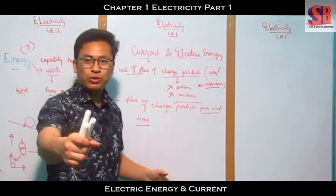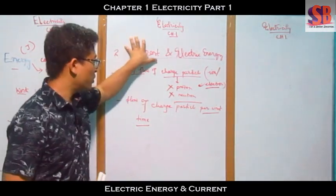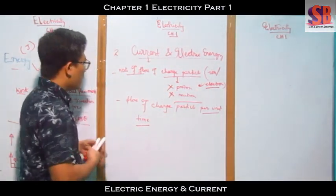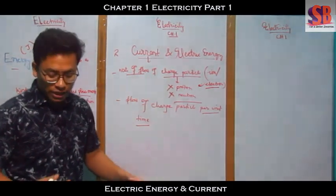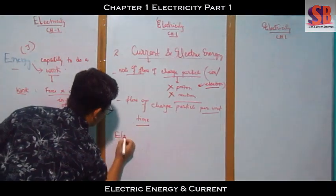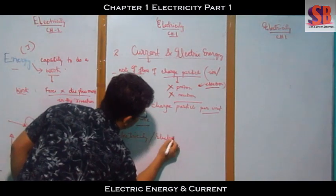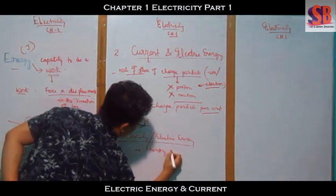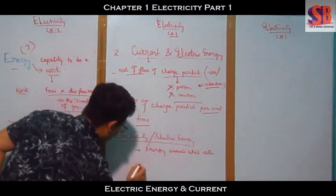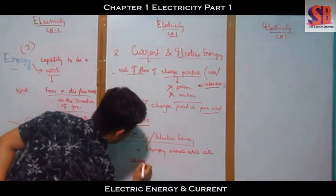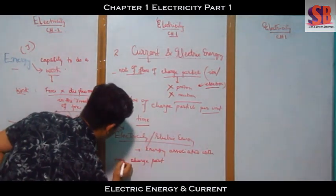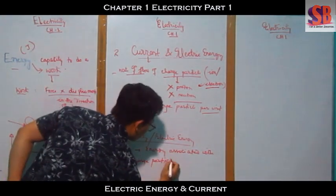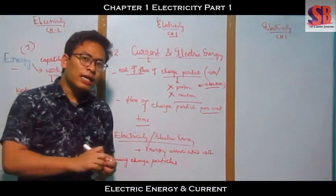The electron is the only component of charge relevant here. These are the key concepts we need to define as electric current. Electric energy is called electricity. Electricity is the energy associated with moving charge particles.